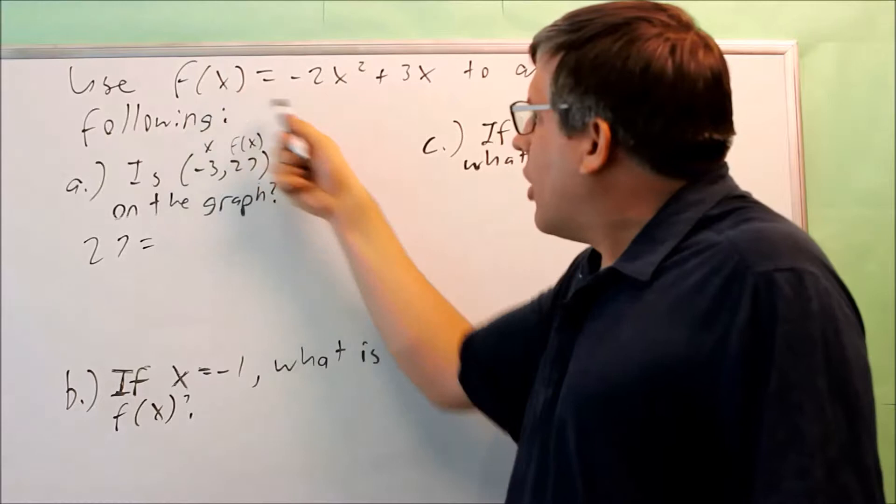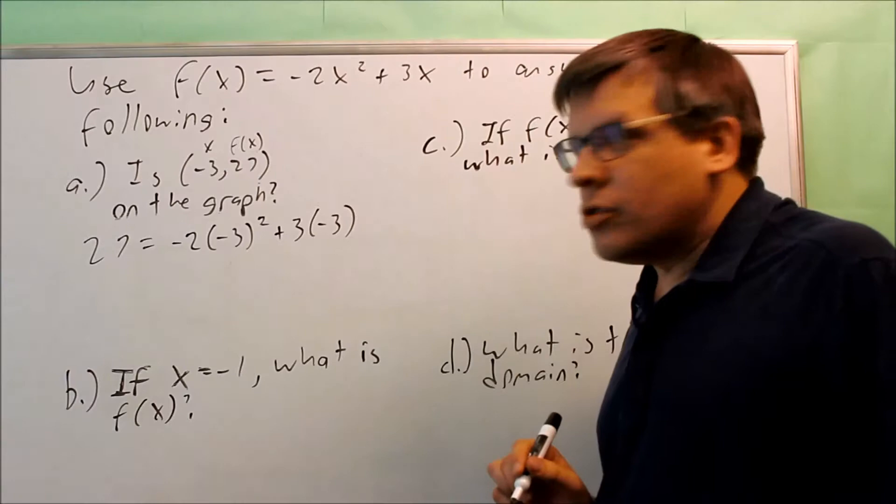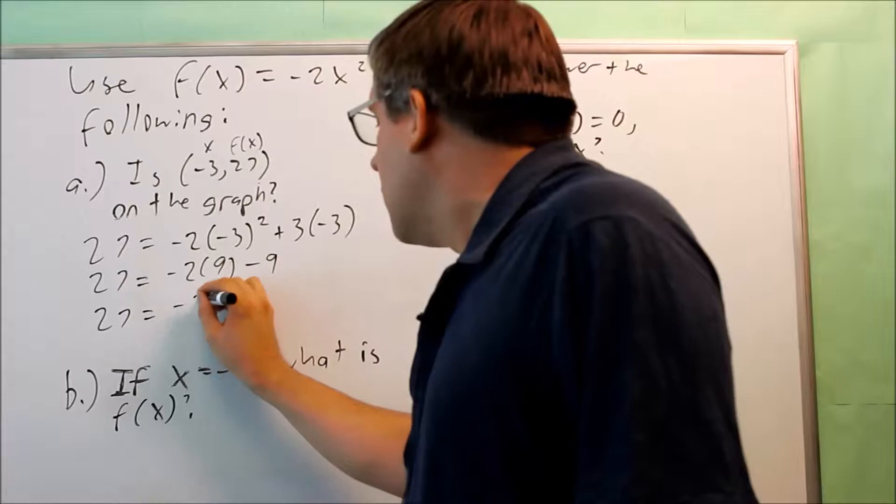Let's check to see what we have. First, I have 27, that's for my f(x). I'm going to put in -3 for both the x's. So I have -2(-3)² + 3(-3), and now I'm going to work this out. So 27 equals -2(9), and then -9 there. I get 27 is equal to -27.